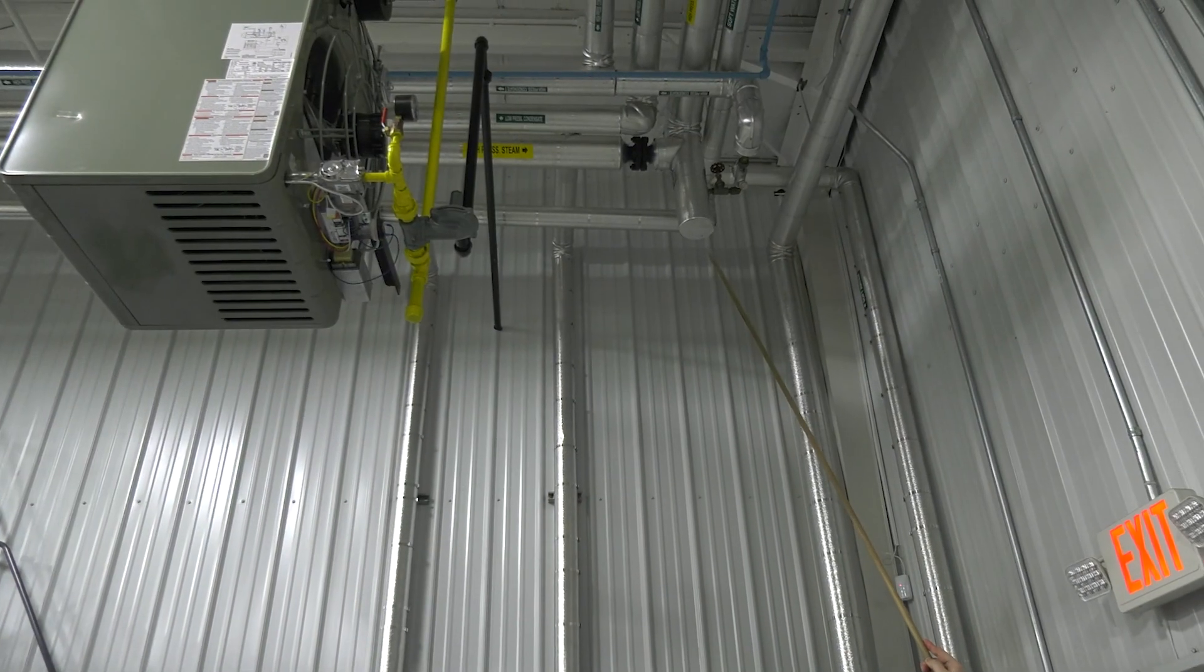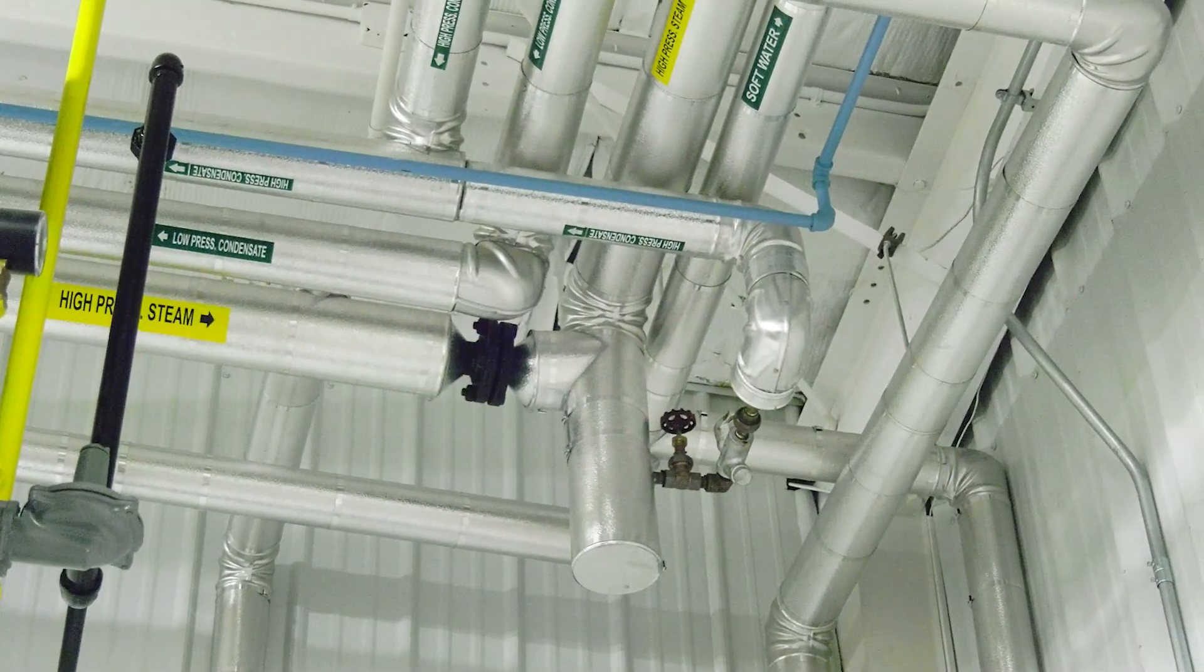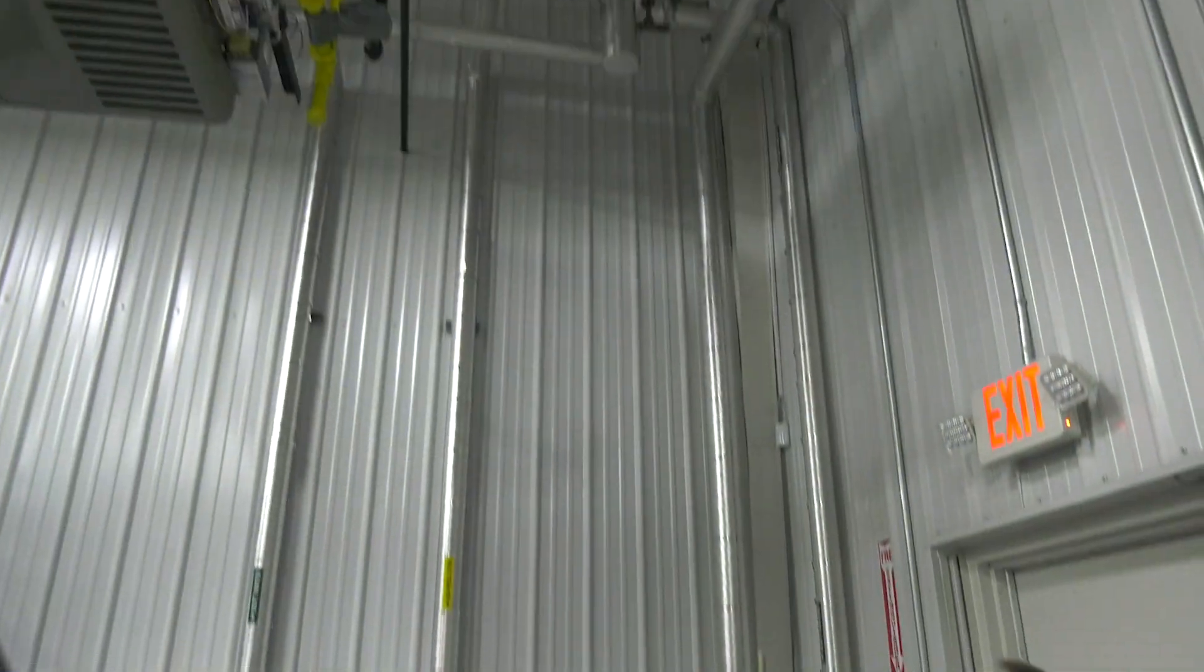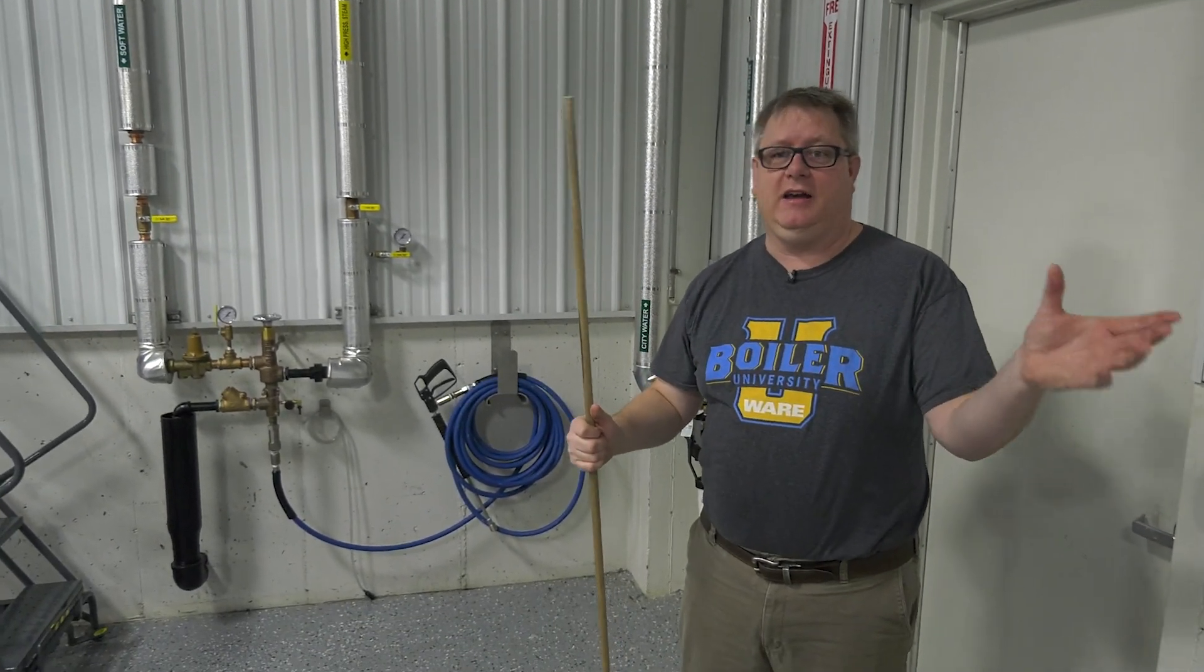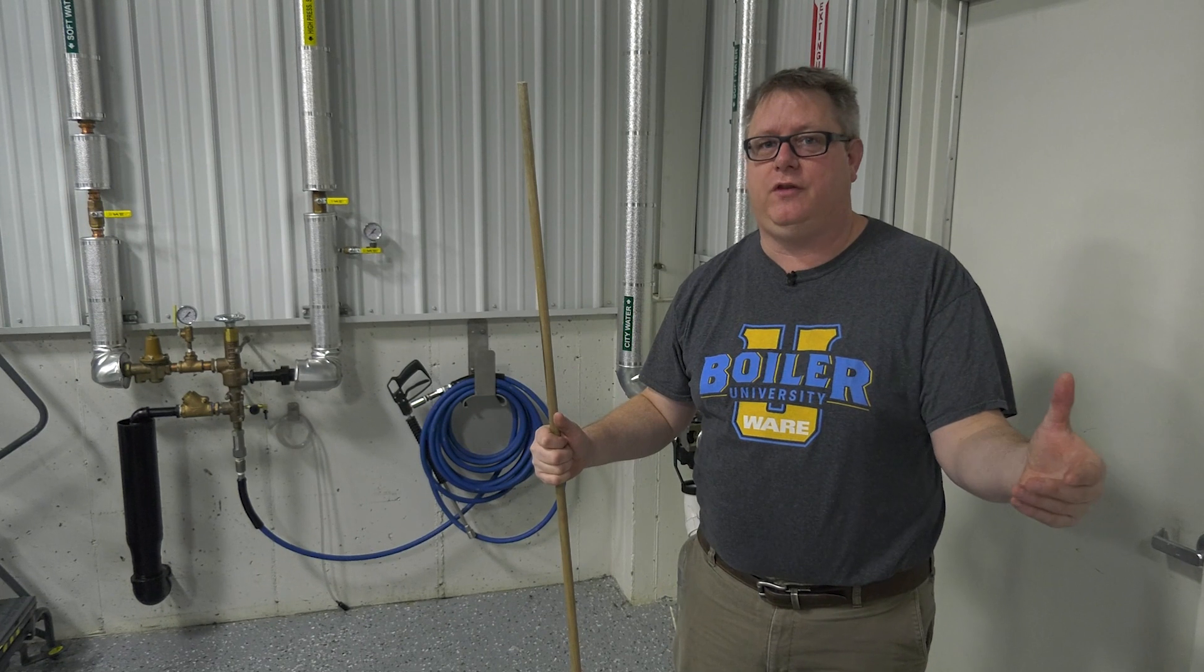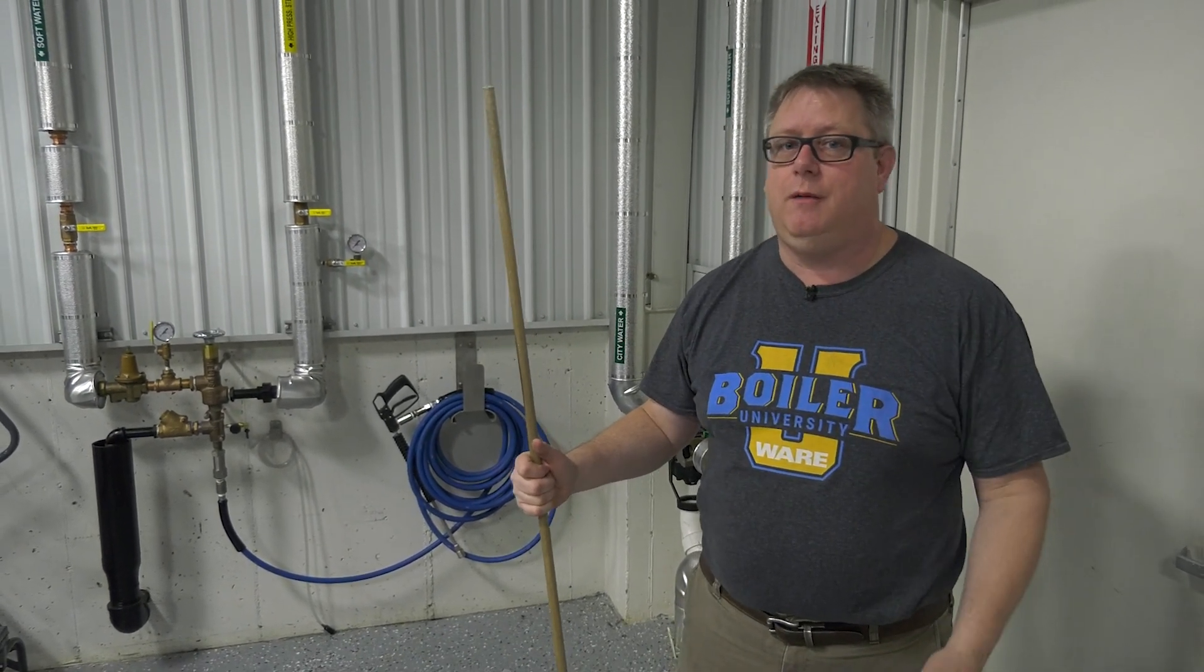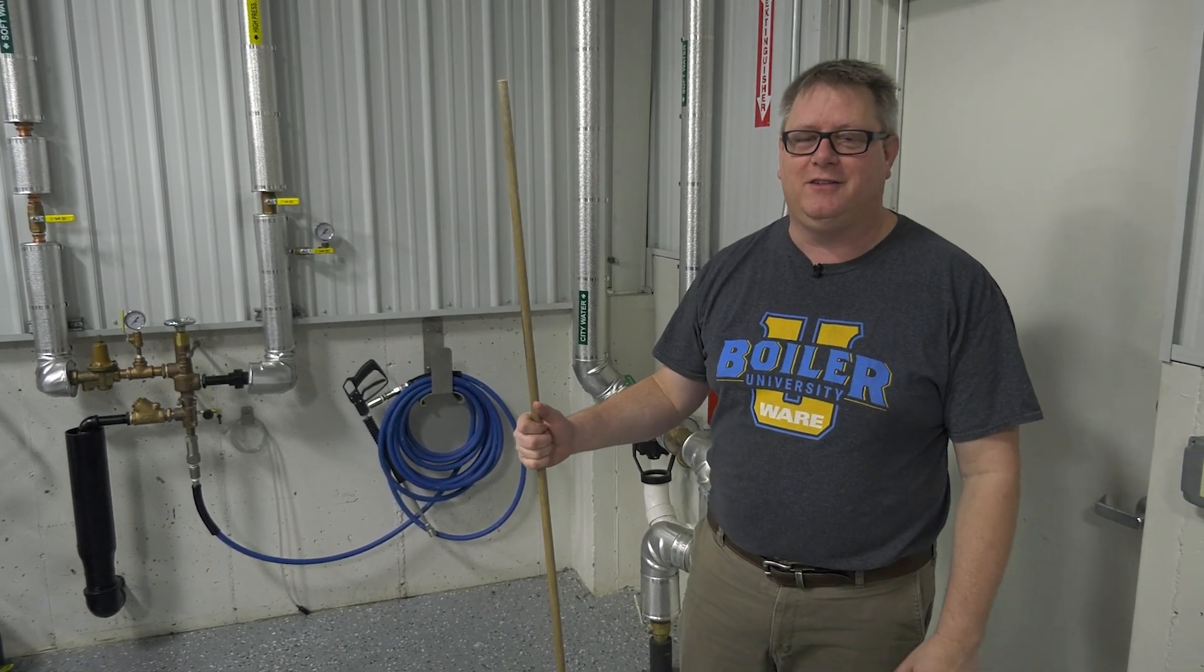And we definitely want to have a drip leg anywhere we elevate our steam line. You can see the steam line just hops up a few inches before going over, but that's definitely going to accumulate condensate there. So anytime we find condensate a problem in our system, there's probably a drip leg that should be there to help keep that clear and make our steam mission successful.